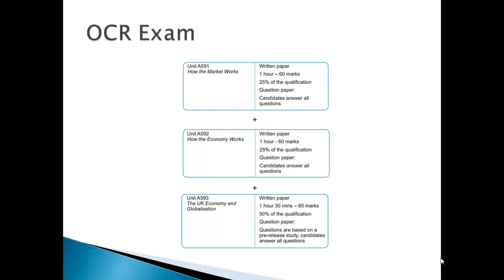Unit 2 is 'how the economy works' and this is macroeconomics — how a firm works in the nation and how the government gets affected as well. That's quite interesting. This is also an hour paper and it's only 60 marks, so a minute a mark as well. But I would recommend, as you do more questions and find it much easier to answer, you should dedicate 5 to 10 minutes to just check over again.